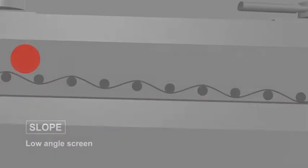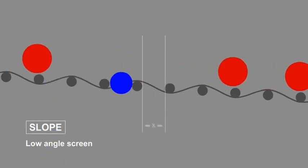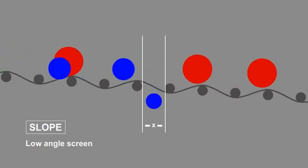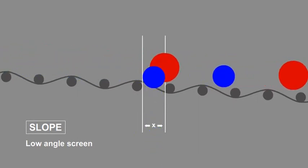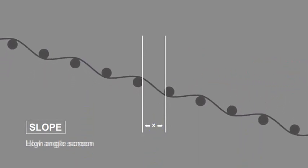On a low angle screen, the aperture presented to the particle is nearly the exact aperture of the mesh chosen for the separation. For example, a two millimeter opening will appear very close to two millimeters to the particle, and the resulting separation will be very precise.